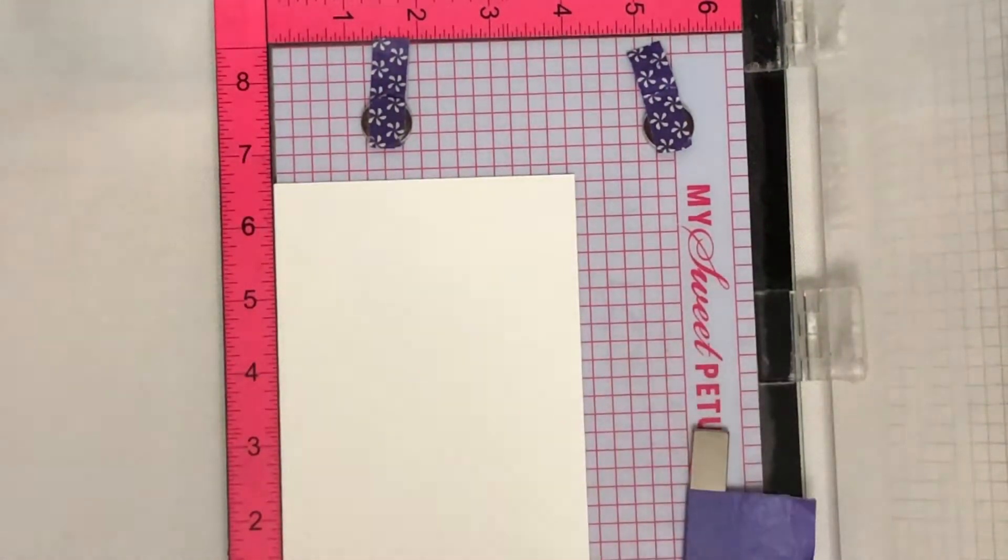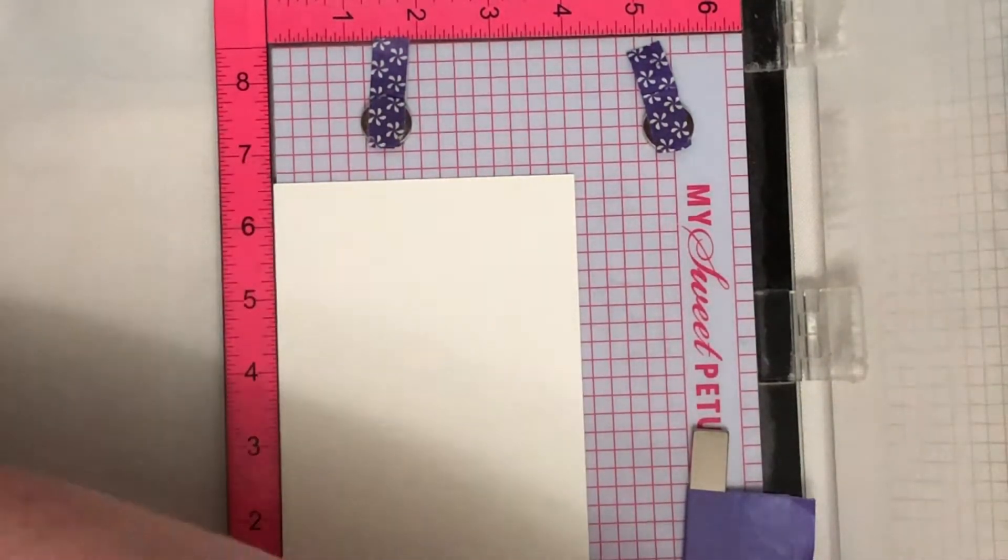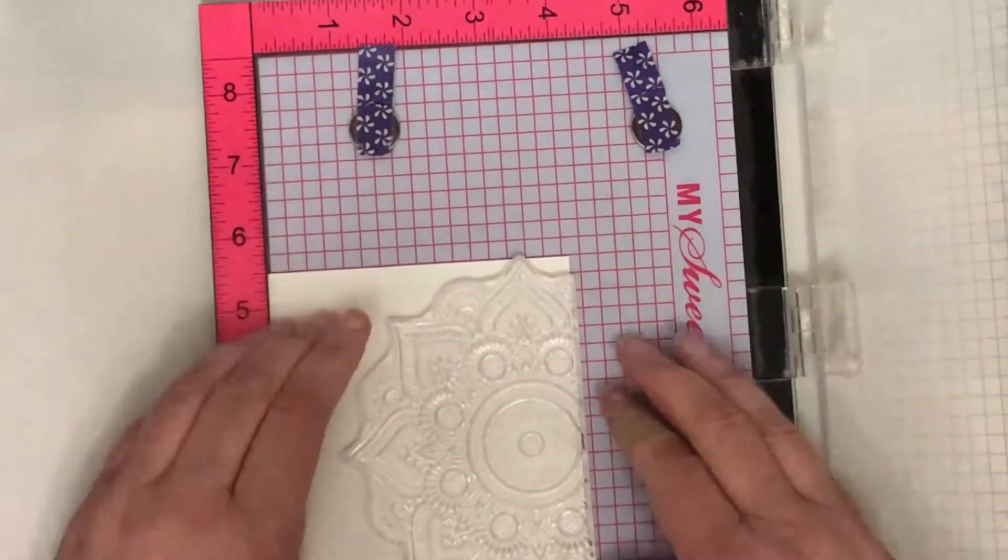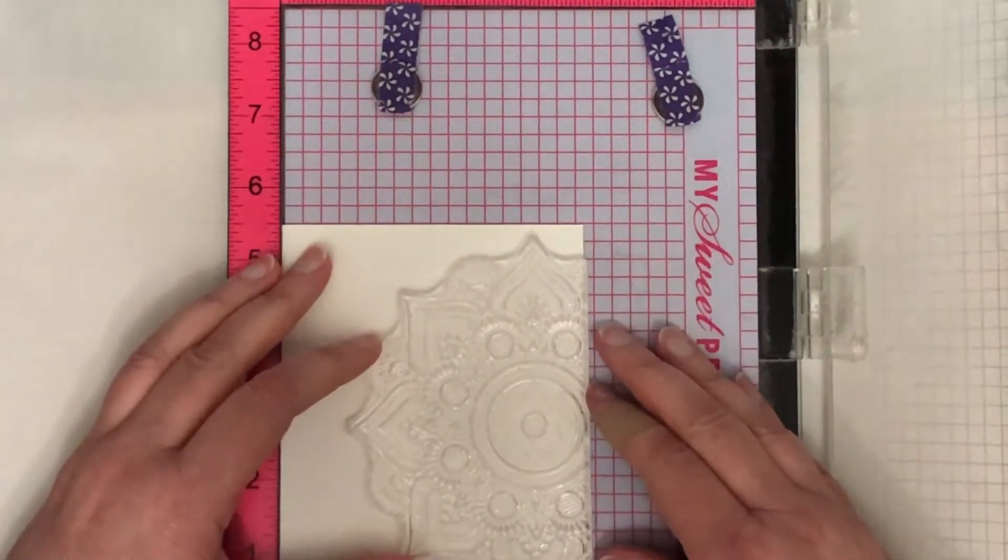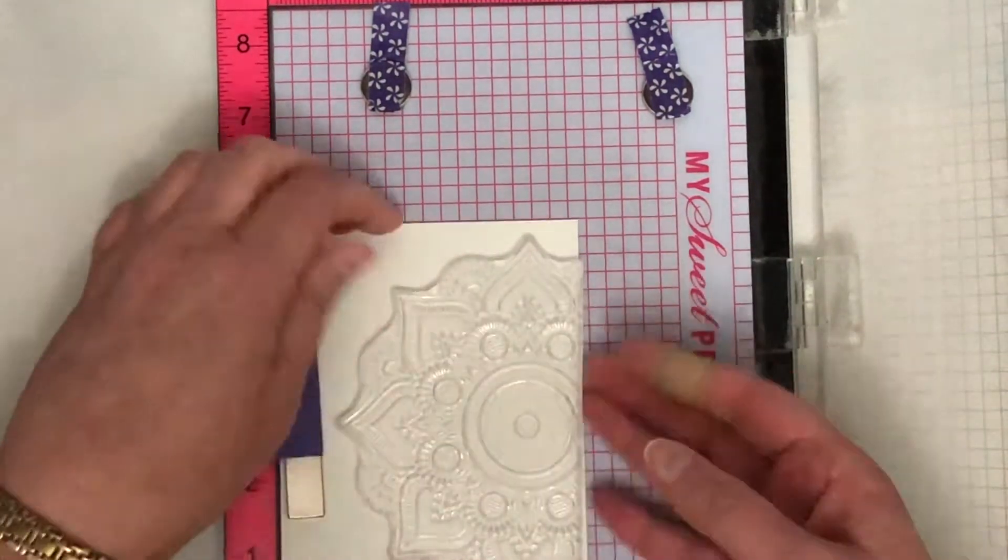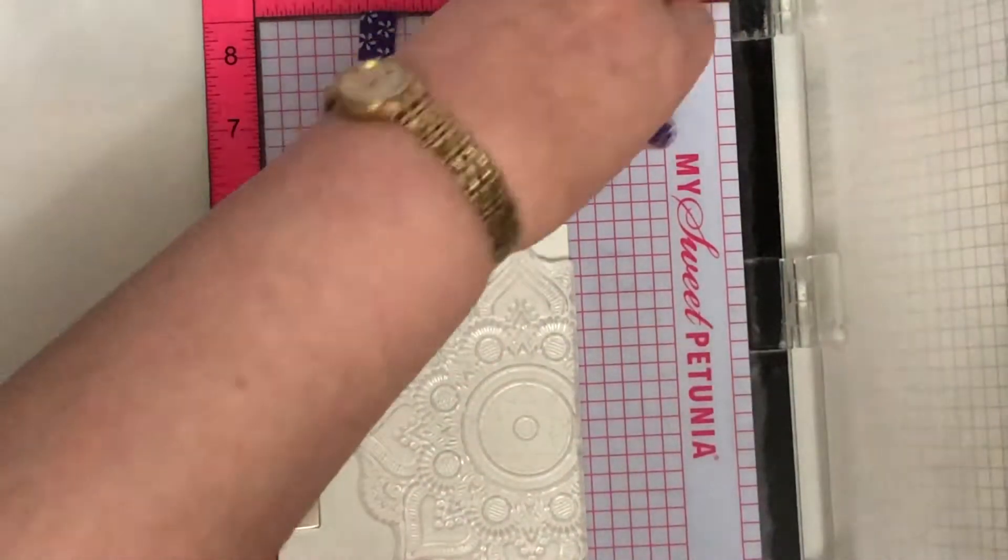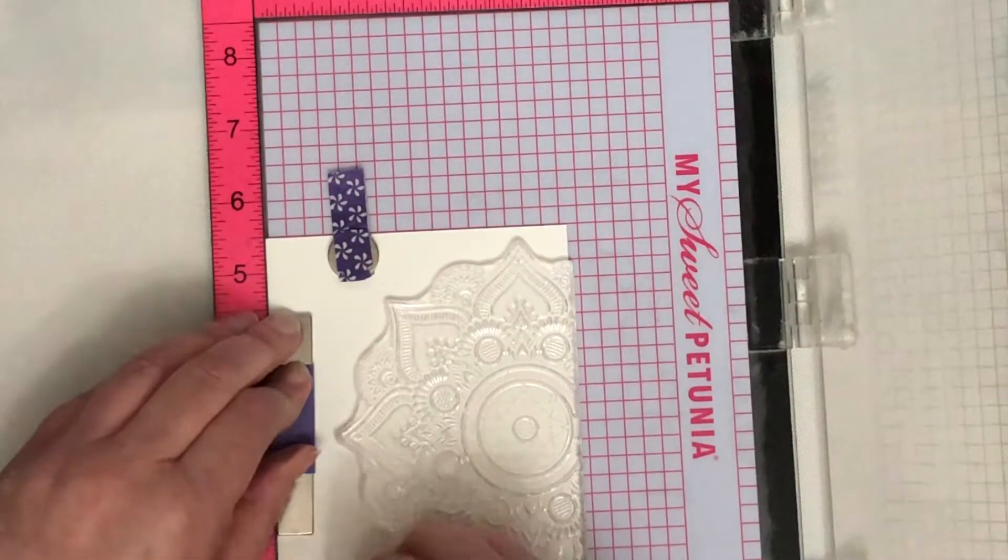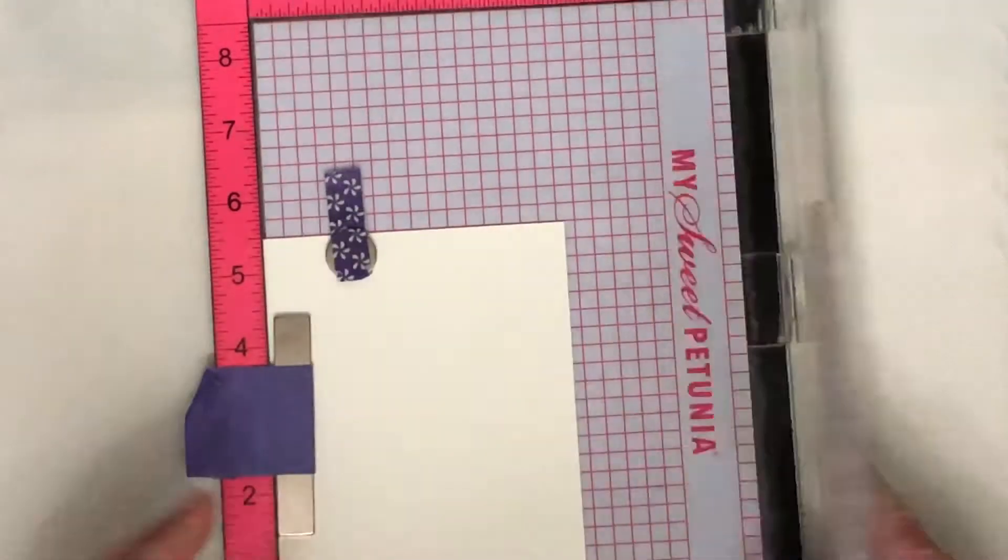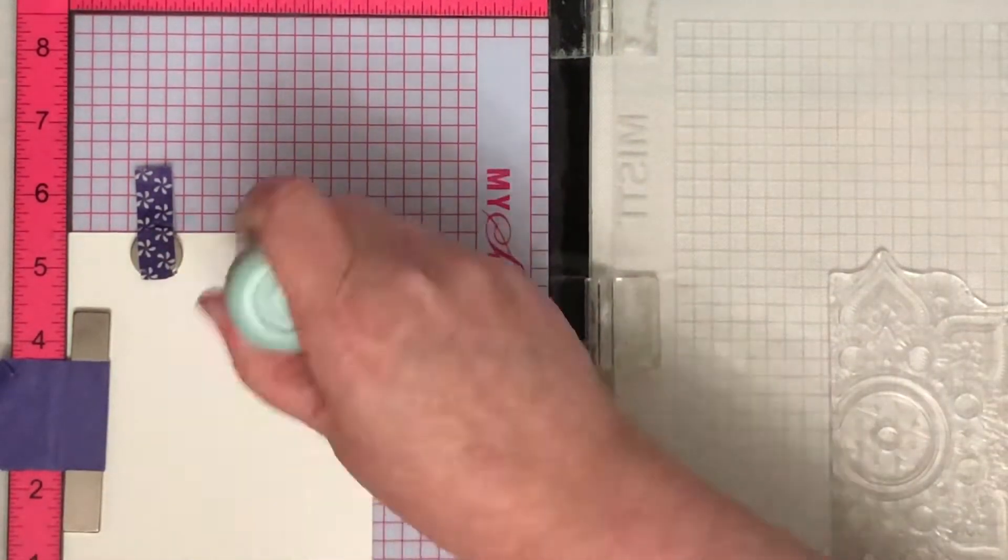I'm starting with some watercolor cardstock. This is Canson watercolor paper and I am using the beautiful mandala clear stamp from Paper Rose which is a gorgeous detailed stamp. I'm just lining it up with the edge of the cardstock which really didn't matter that much because later on I'm going to cut it down just a teeny tiny bit.